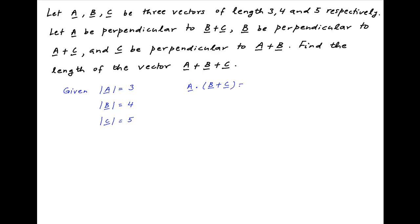Also, vector a is perpendicular to b plus c, therefore a dot b plus c is equal to 0. Similarly, b dot a plus c is equal to 0, and c dot a plus b is equal to 0.